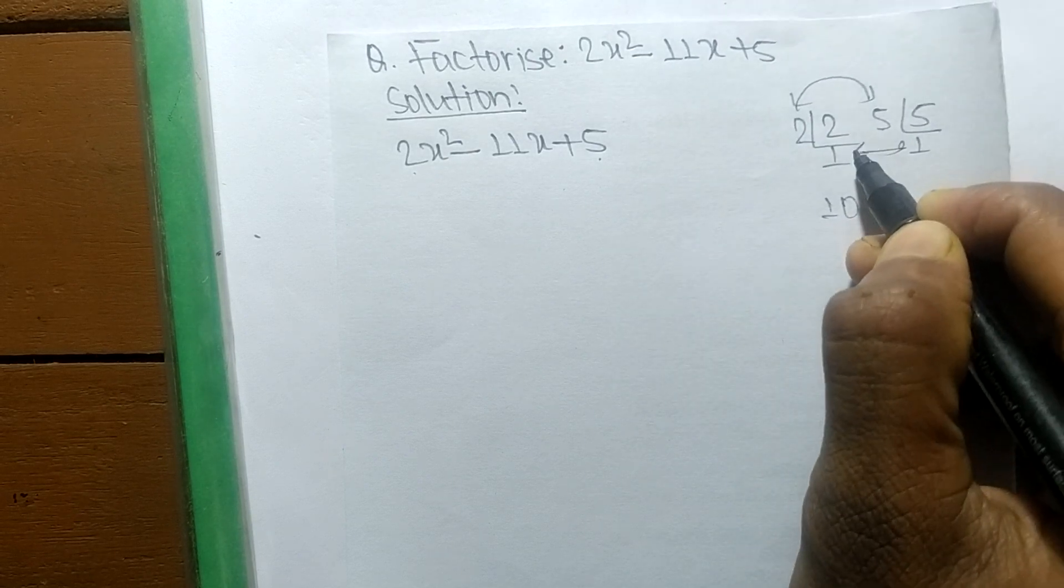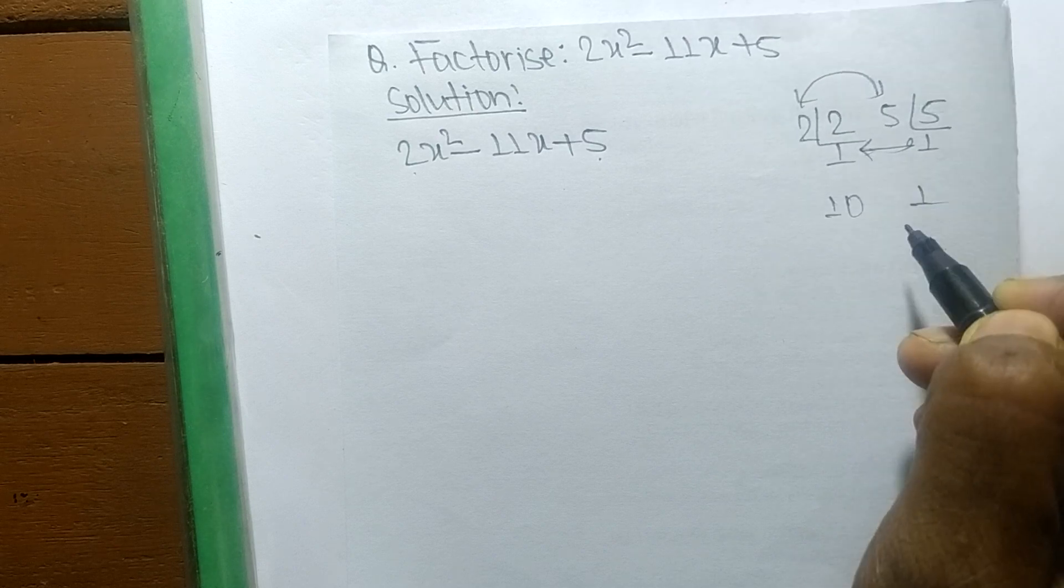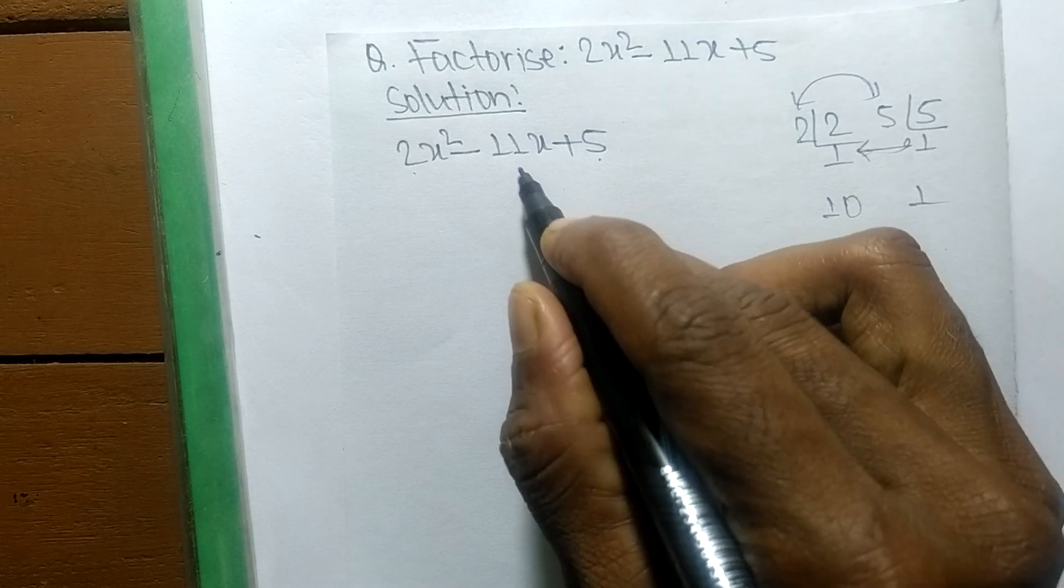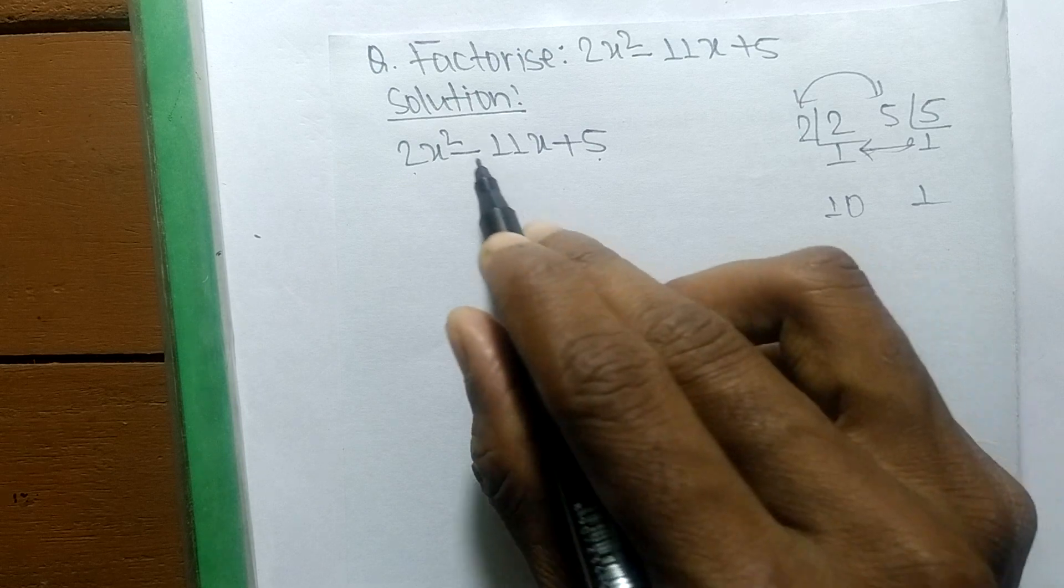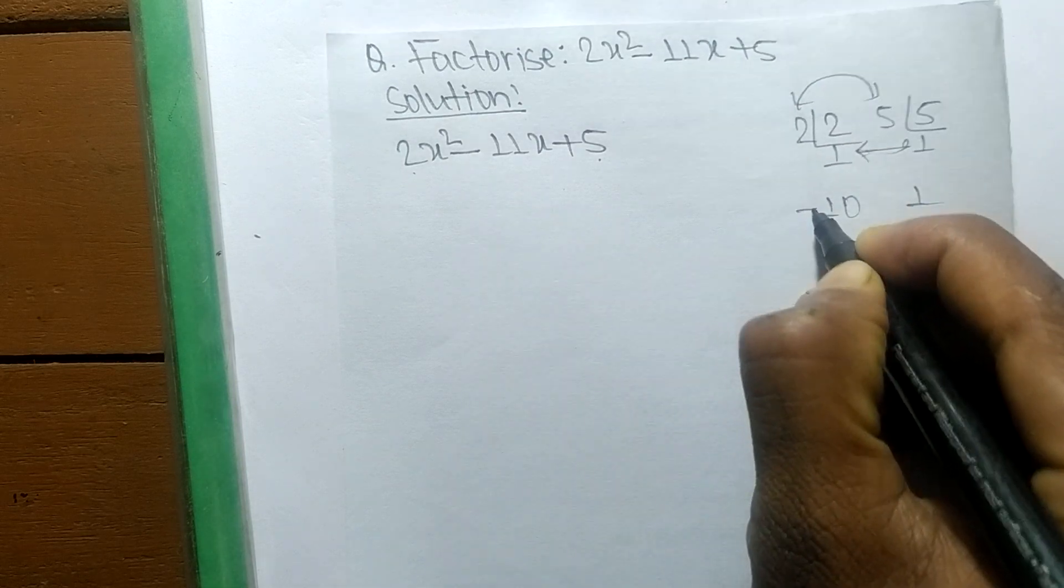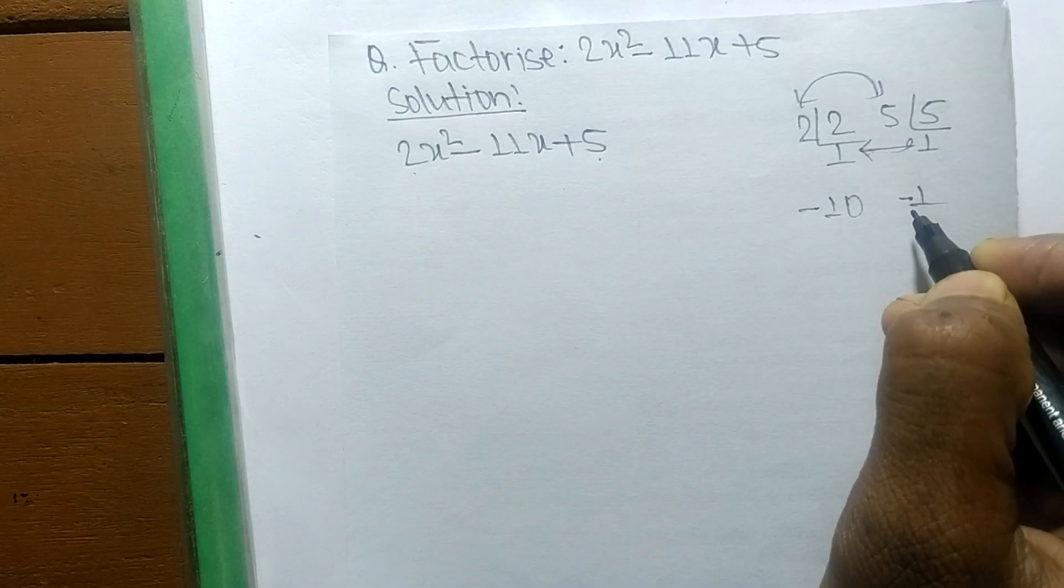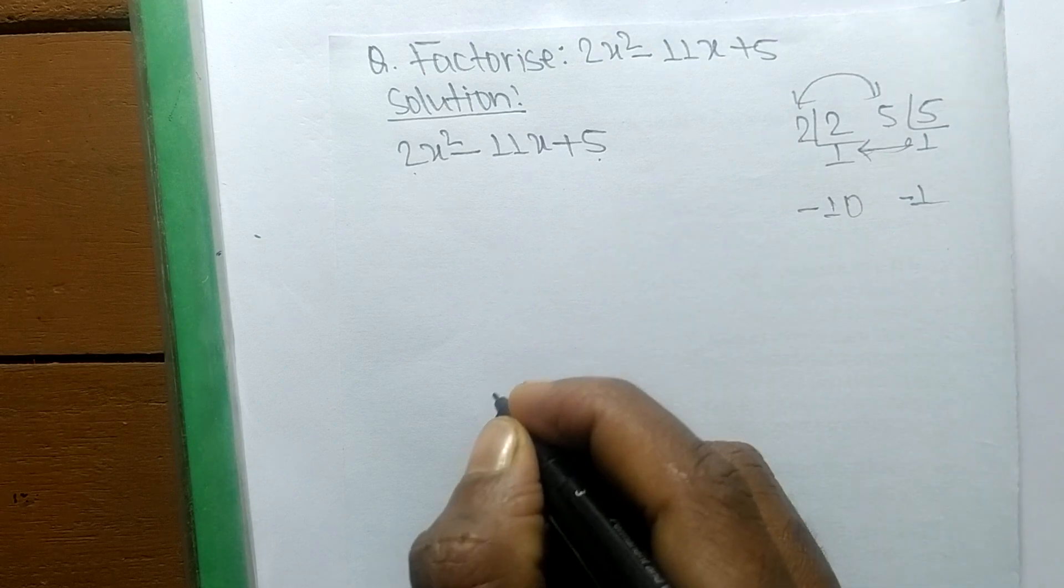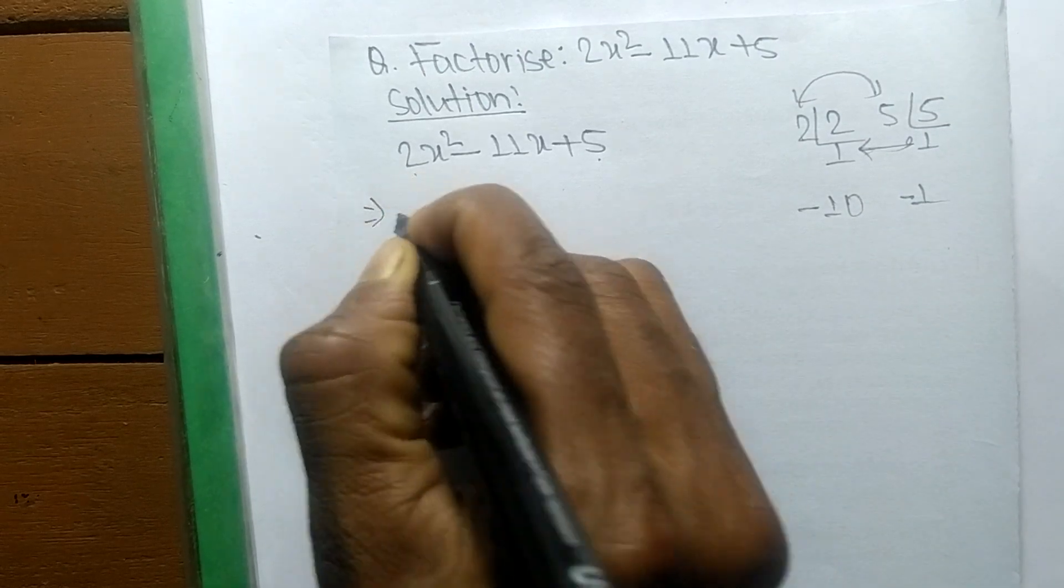And when you multiply these ones we get 1. So 10 plus 1 means 11. We have to take minus 11, so minus 10 and minus 1 means it is minus 11.